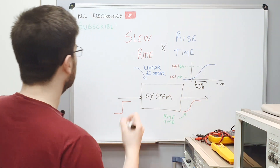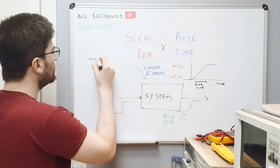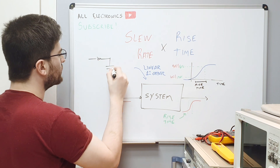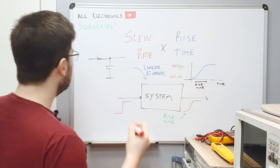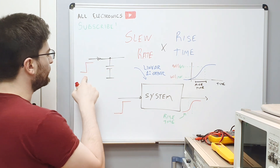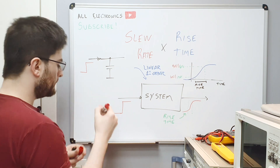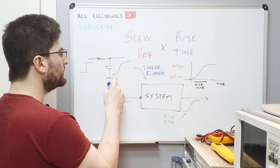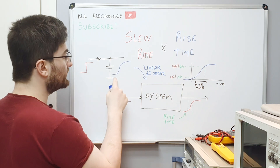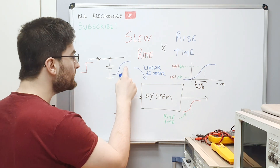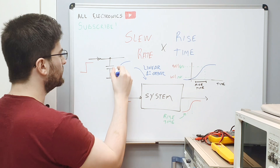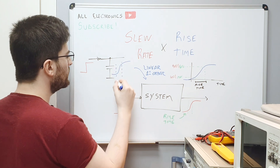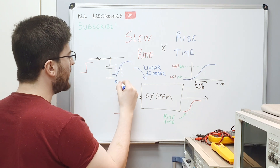This is a common response from a low-pass filter. If we have an RC first order filter and excite the input with a step, we're going to have at the output a signal that rises over a finite amount of time. This time is the rise time.